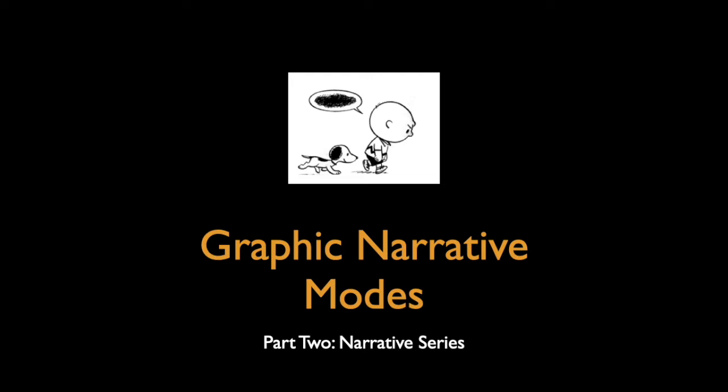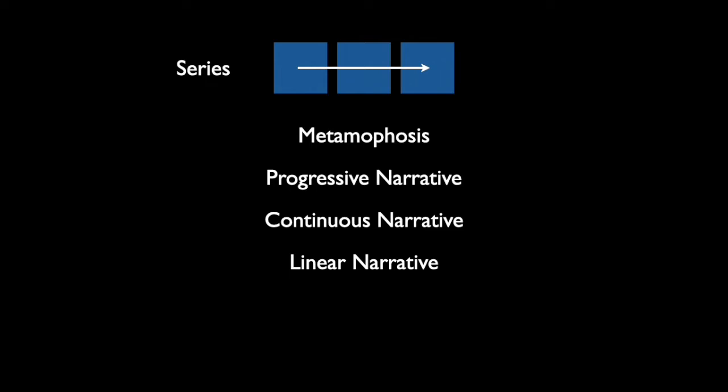Hi, everyone. Welcome back to History of Graphic Narratives. In this lecture, we're going to look at another kind of narrative mode: the series. The series can be one of four different kinds — a metamorphosis, progressive narrative, a continuous narrative, or a linear narrative — and we're also talking about a consequential narrative as part of a series. A series is any set of images that has a very set path; you're supposed to begin here and continue reading till you reach the end. As soon as people have literacy and an idea about reading a text, they begin to organize images similarly in a row, depending on whether they read from right to left or left to right. These images in a series suggest an ordered way in which you're supposed to understand the images.